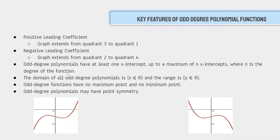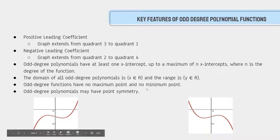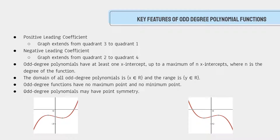If we look at the graph of y equals x, we know that it will cross the axis at least once. The domain of all odd-degree polynomial functions is x is an element of all real numbers, and the range is y is an element of all real numbers. Odd-degree functions have no maximum point and no minimum point.